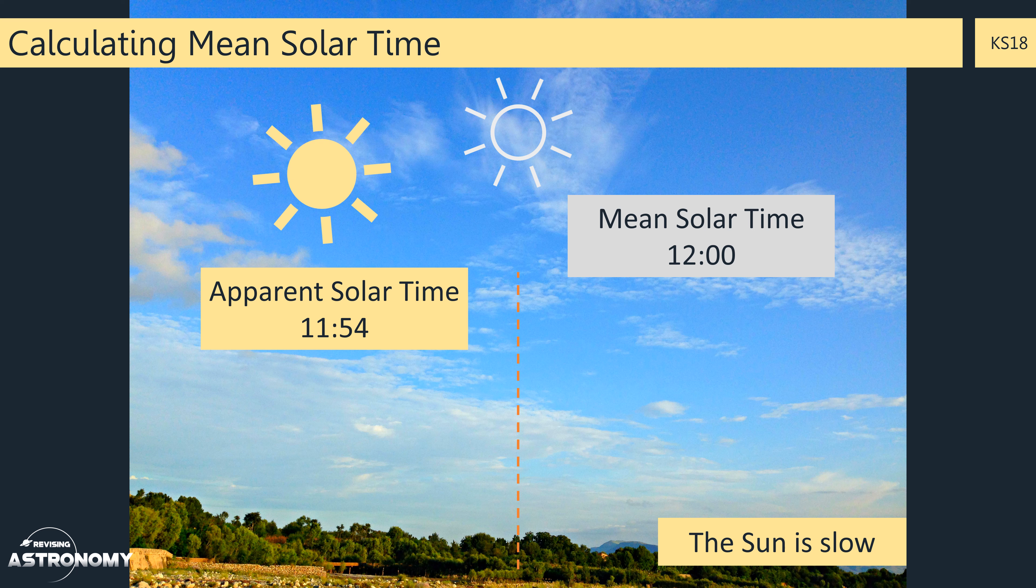To correct for this, you'd need to know the difference between the apparent solar time and the mean solar time, which in this case is minus 6 minutes. It's a minus number because the Sun is slow. And we call this value the equation of time for that day.